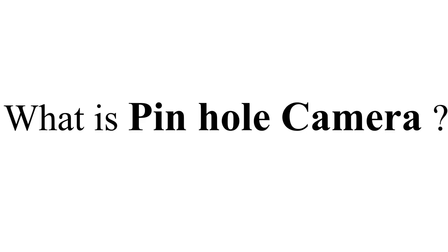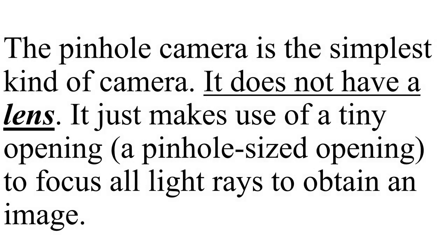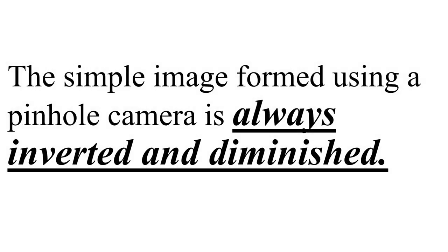Before starting this activity, let us first know what a pinhole camera is. The pinhole camera is the simplest kind of camera. It does not have a lens; it just makes use of a tiny pinhole-sized opening to focus all light rays to obtain an image. The image formed using a pinhole camera is always inverted and diminished — inverted means upside down and diminished means faded.